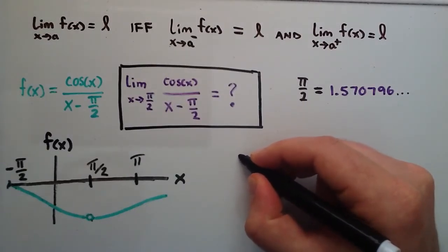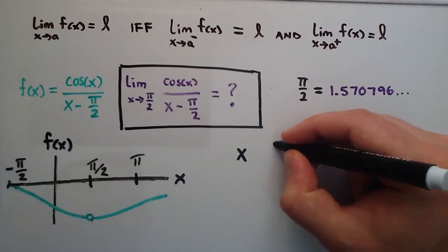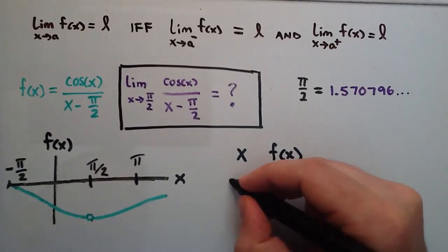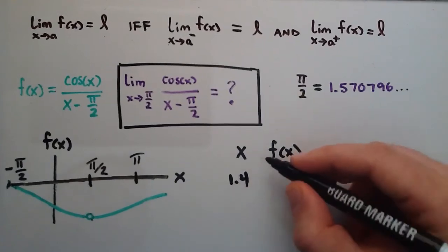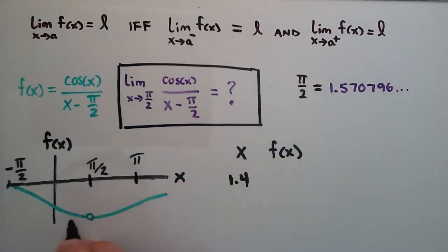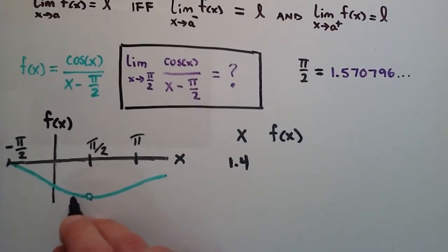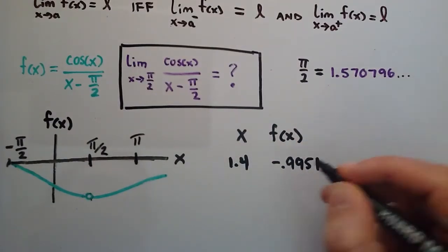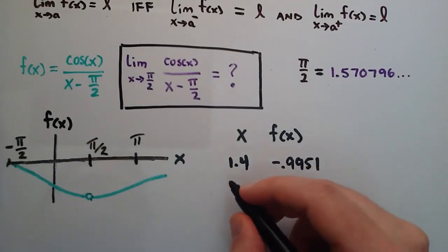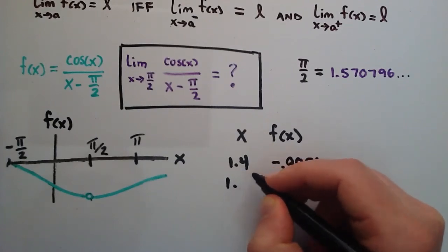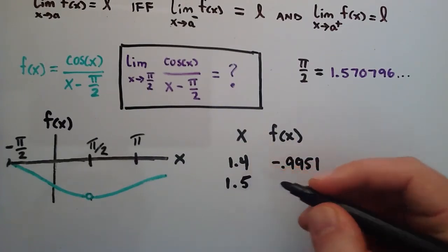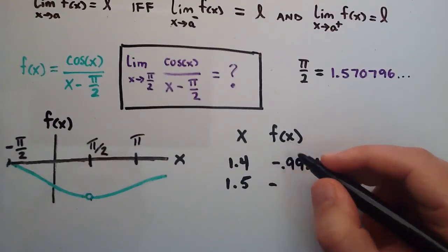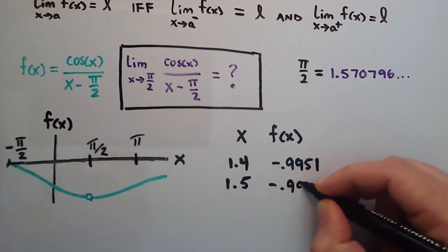Let's approach from the left. We have some x values and corresponding f(x) values. For the first x value, we look at 1.4 — we're on the left-hand side of our function. f(1.4) is negative 0.9951 to four decimal places. Going a little closer, at x equals 1.5, we plug 1.5 into our function and find that f(1.5) is negative 0.9992.